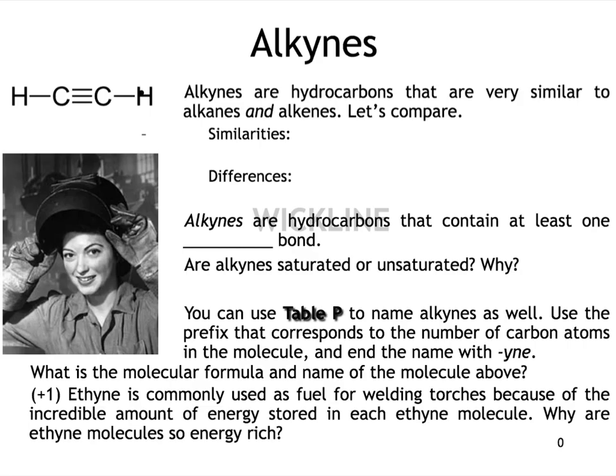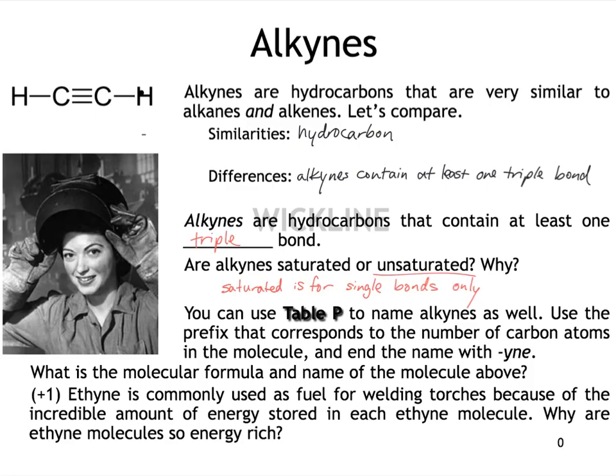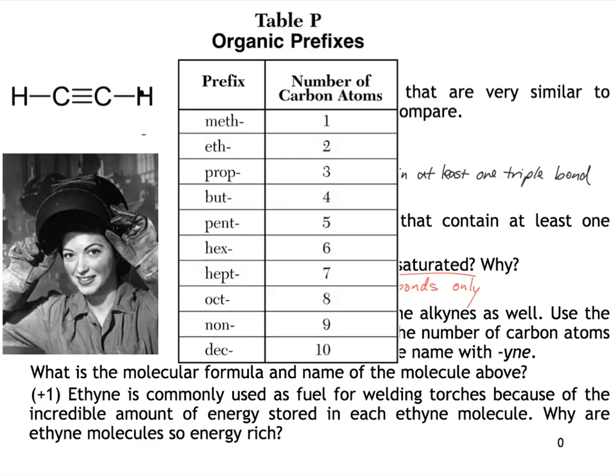And we also need to compare alkynes to alkenes and alkanes. So alkynes, which end with a Y, are also hydrocarbons, so that's a similarity between alkanes and alkenes. And a difference would be that alkynes contain at least one triple bond. Alkynes are hydrocarbons that contain at least one triple bond. And that also means they're unsaturated because saturated is only for single bonds. And we can use Table P to name alkynes. So we have this two-carbon alkyne. Two carbons is eth. And since it belongs to the alkyne family because it has this triple bond, we will end it with the suffix yne. So ethyne.